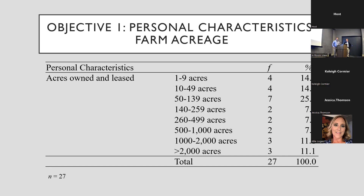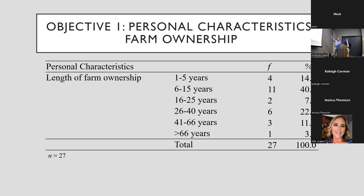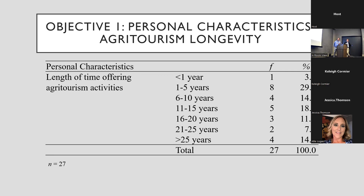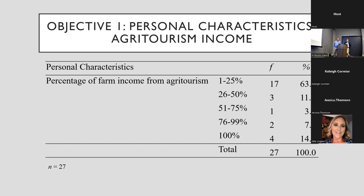Length of farm ownership was interesting — ownership in the first 6 to 15 years opens up questions: were these purchased or inherited? Length of time they've offered activities correlates with the revenue slide from the last 12 years. Six to 10 years and 11 to 15 years are the most common, followed by one to five years — roughly 30% of participants, one third, are very new to this field.